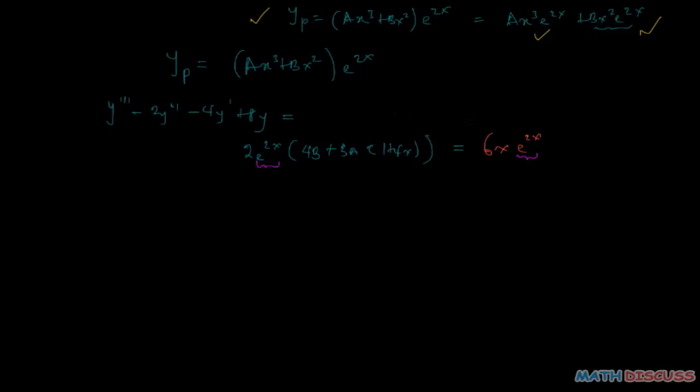That's going to be the coefficient of e to the power 2x. So it means the coefficient of e to the power 2x on the left hand side, that'll be 2 into 4b plus 3a into 1 plus 4x equals 6x. That's exactly what we have, and then when we expand this we have 8b plus 6a plus 24ax equals 6x.